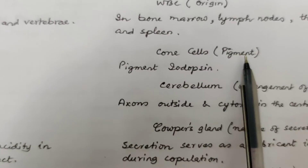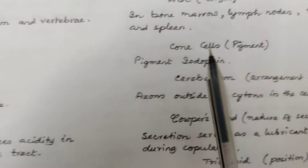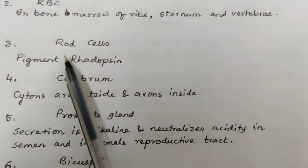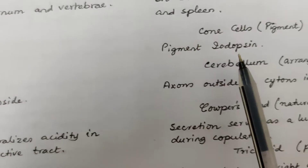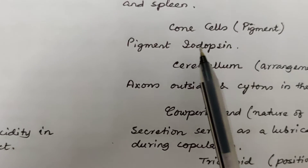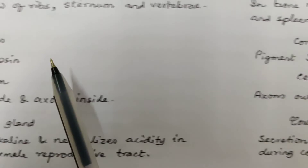Rod cells and cone cells based on their pigment: rod cells have the pigment rhodopsin, whereas cone cells have the pigment iodopsin.